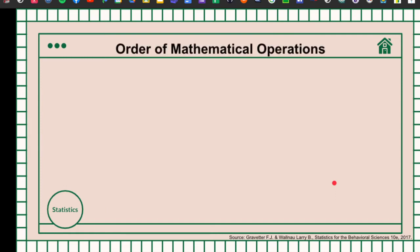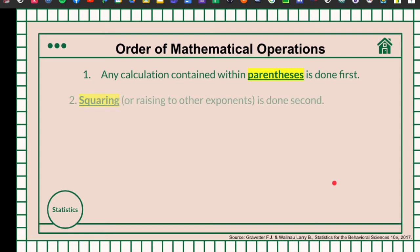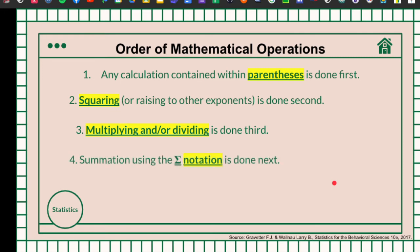The order of mathematical operations that we have to use: first is we have to calculate the one that is contained in parentheses. Second is the squaring, or we call this as the rising to order exponents. And then third is multiplying and dividing. In the multiplication and division operation, this shall be done in order from left to right. We also have the summation using the summation notation. Summation is the sum of the sets of scores. And then we're going to do the addition and subtraction.